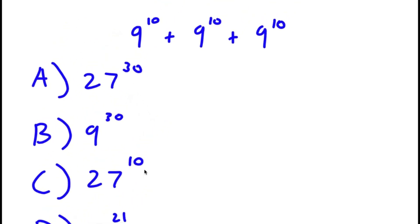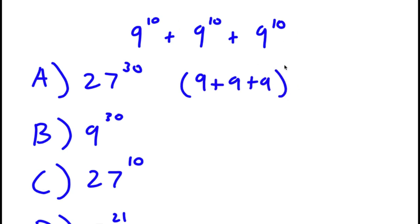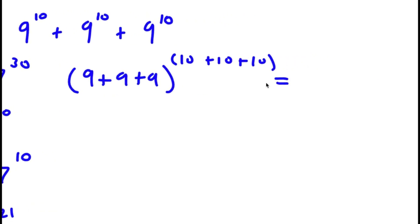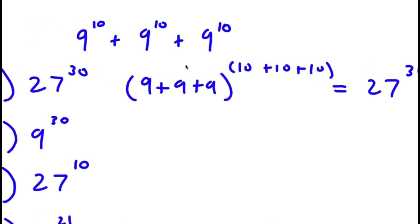We want to figure out which answer choice is correct. For answer choice A, 27 to the power of 30, you obtain this by adding all the bases and exponents: 9 plus 9 plus 9 gives 27, and 10 plus 10 plus 10 gives 30, so you get 27 to the power of 30 using this method.